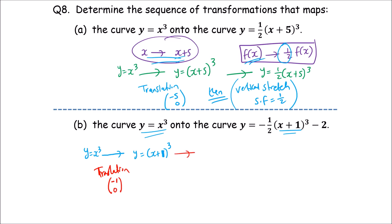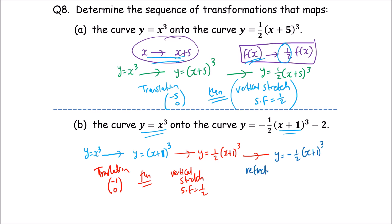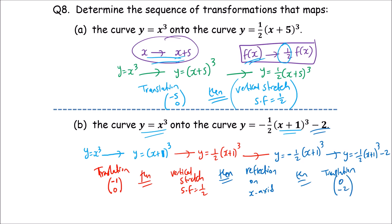The next step is to take half of (x+n) cubed, which gives a vertical stretch with scale factor one-half. Then take a negative of the function — negative half of (x+n) cubed — which is a reflection on the x-axis. Finally, apply a vertical translation two units down, with translation vector (0, -2).